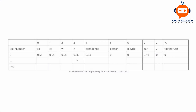To better understand this, here we have a table representing the values inside our arrays. The first element is CX, the center X point, then CY the Y center point, then width and height. The fifth element is the confidence of the object — here we have 0.93 confidence that there is an object in this box. From index 5 to 79 we have 80 different classes. For example, for the car class we have 0.93 probability, meaning we are 93% confident there is a car present.